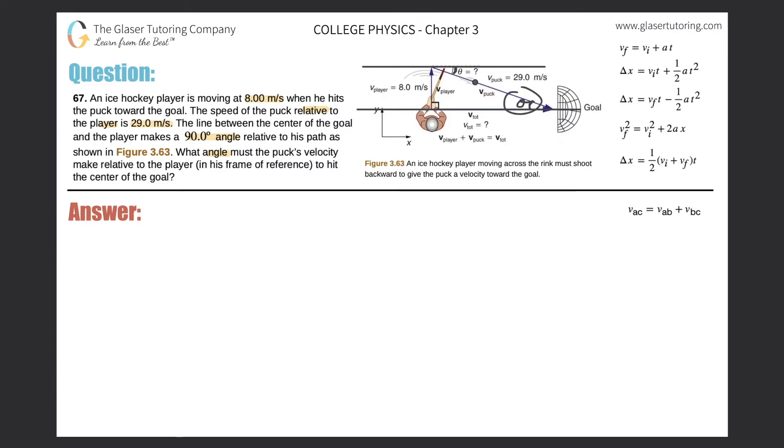So how do I find this angle in the triangle? Well, what do you know about the triangle itself? You know the opposite side, that's 8 meters per second, and you also know the hypotenuse, that's 29 meters per second.